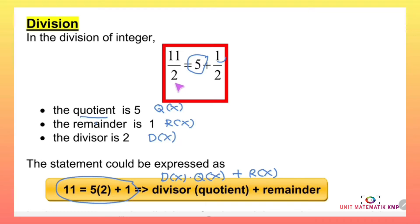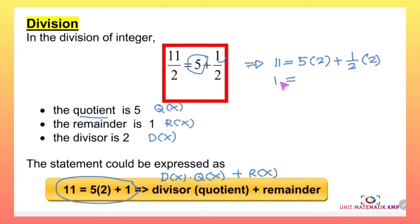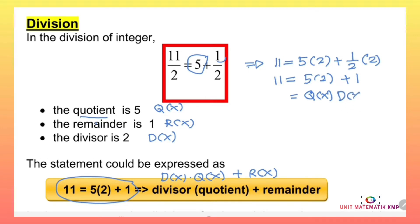The division statement can be expressed as 11 equals 5 times 2 plus 1, which is d(x) times q(x) plus r(x). We get this equation by cross-multiplying: 11 equals 5 times 2 plus 1 over 2 times 2, which simplifies to 11 equals 5 times 2 plus 1. Here, 5 is the quotient q(x), 2 is the divisor d(x), 1 is the remainder, and 11 is the polynomial.